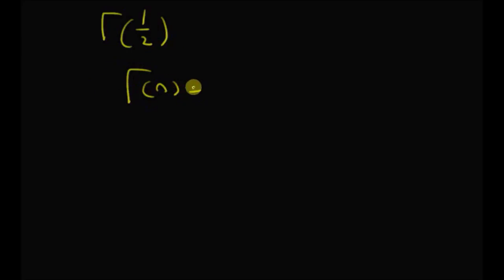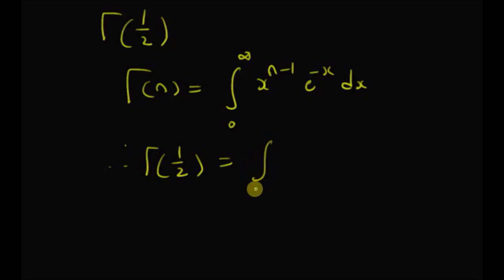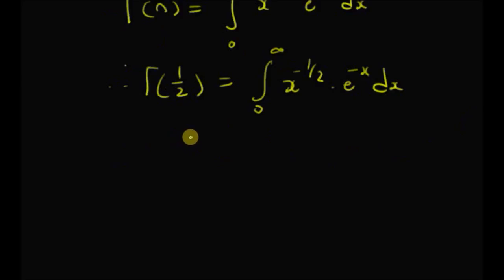Γ(n) is given by the integral from 0 to infinity of x^(n-1) · e^(-x) dx. Therefore, Γ(1/2), that is gamma of half, is given by the integral from 0 to infinity of x^(-1/2) · e^(-x) dx.